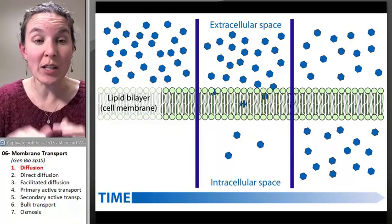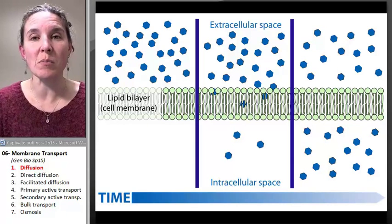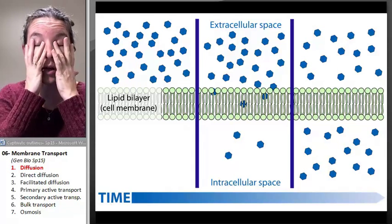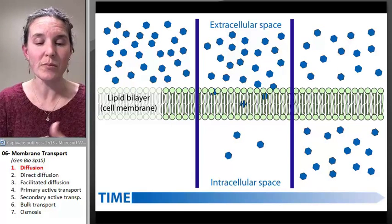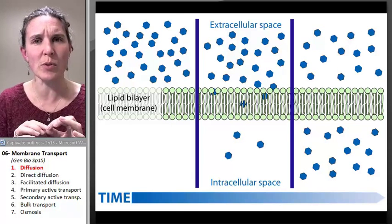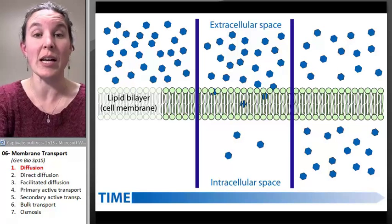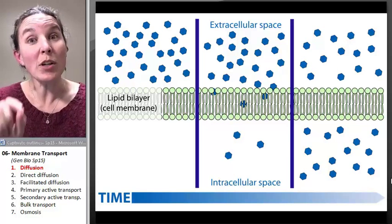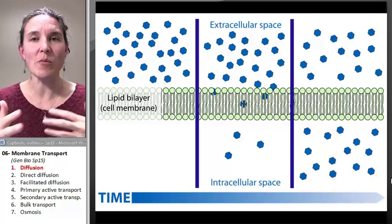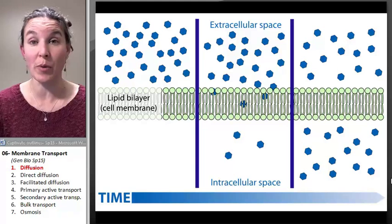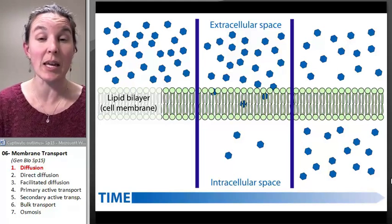We're going to start out by looking at the process of diffusion, because diffusion fuels an unbelievable amount of transport. And it's based on a few key principles that are pretty important to make sure that we understand. Then we're going to look at the kinds of molecules that can simply diffuse across the cell membrane. Some things can, not very many things, but some things can.